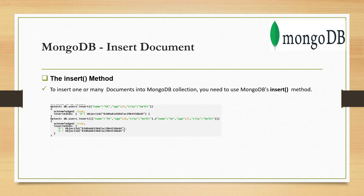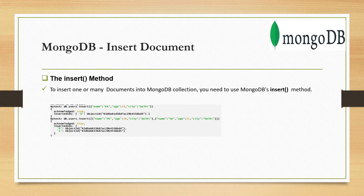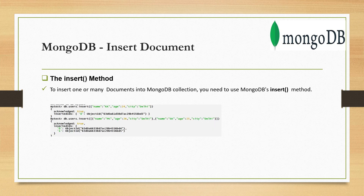The next method is insertOne. Whenever you want to insert a single document, you can of course use insert for single or multiple documents. But you might wonder why insertOne is needed. The insert method may be deprecated or removed in future versions of MongoDB — I'm currently using MongoDB v6 — so insertOne is recommended when you need to insert one document. You simply pass one JSON object as a document, and the return value is very similar to inserting a single document using insert.